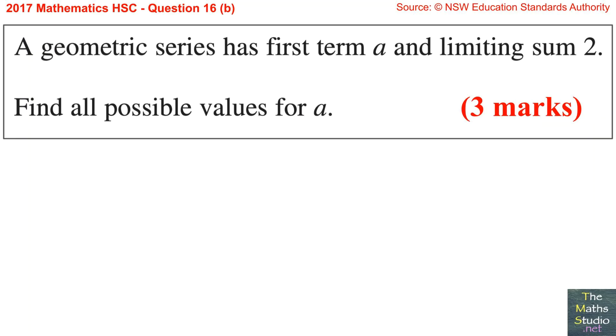Question 16, part B. A geometric series has first term A and limiting sum 2. Find all possible values for A.